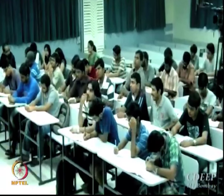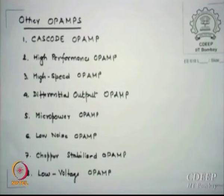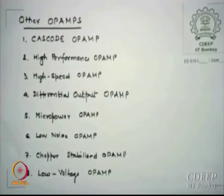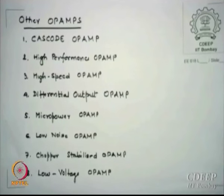The op-amp we looked at all these days was a normal single-ended two-stage amplifier. There are other op-amp types in hardware: cascode amplifier op-amp, high-performance op-amp related to slew rates, high-speed op-amp related to bandwidth, differential output op-amp with two differentiated outputs, micro-power op-amps with very low power, low-noise op-amps, and chopper-stabilized op-amps used in power electronics.